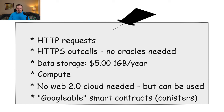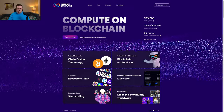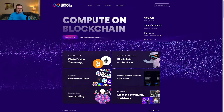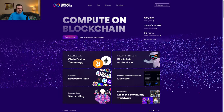Internet Computer smart contracts, which they refer to as canisters, are Google-able, meaning that they are indexed by search engines and you can find sites through a traditional Web 2 search engine, which is a pretty cool thing. Internet Computer's website, internetcomputer.org, is hosted completely on-chain using Internet Computer.